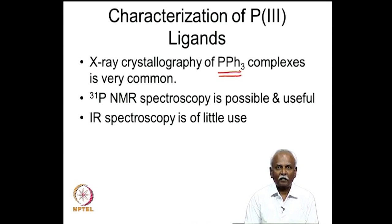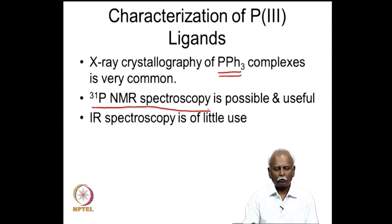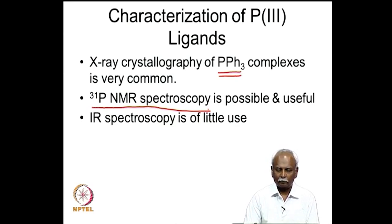Whenever you have PPh3 as an ancillary ligand, the organometallic complex is easy to crystallize. If it crystallizes as a single crystal, one can do the crystallography of the molecule and study the solid-state structure very readily and extremely accurately. One can also carry out ³¹P NMR spectroscopy, which is a very useful technique because no other element in the molecule interferes in this spectrum — only the ligand is visible in the NMR spectrum.